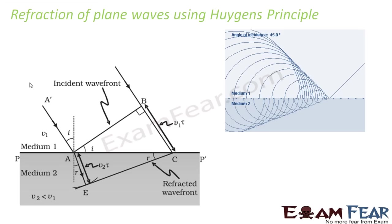The only difference here is that since you have two different media, whenever any ray of light falls on the boundary, some part of it gets reflected and some part of it gets refracted. In the previous slide we were concentrating only on the reflection part, we were ignoring the refraction part, but here we will take into consideration the refraction part.